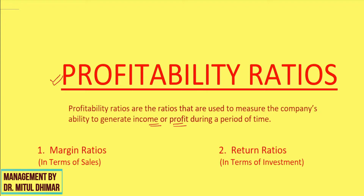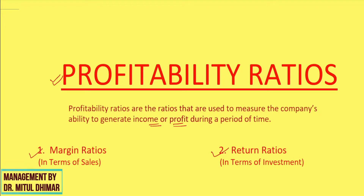Generally there are two types of profitability ratios: margin ratios and return ratios. Margin ratios check profitability against operational revenue, that is sales. Return ratios tell us how much profit a business is generating for its investors. The basic formula for margin ratios is profit divided by sales into 100, and for return ratios, profit divided by investment into 100.